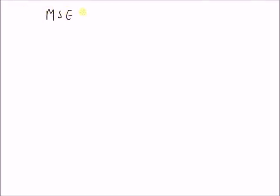Hello, welcome. In this short video, let us look at the derivation of the relation between mean square error of an estimator and the variance and bias of the estimator. We want to derive the following relation: the mean square error of an estimator theta hat is equal to variance of the estimator plus square of the bias.